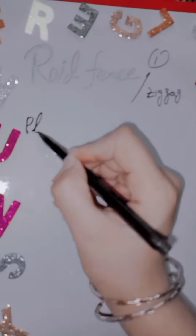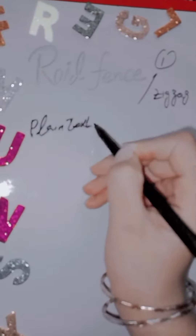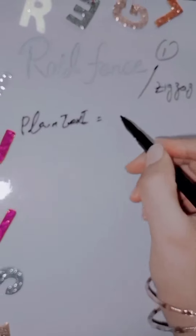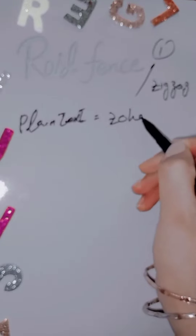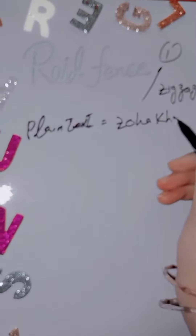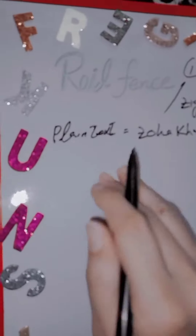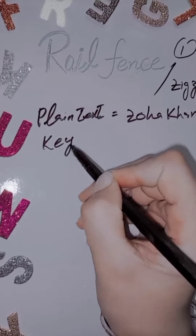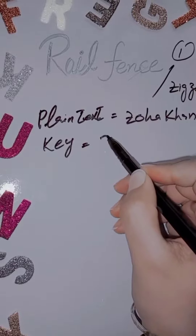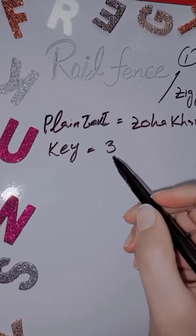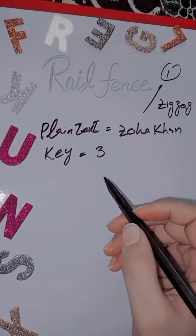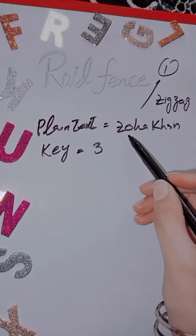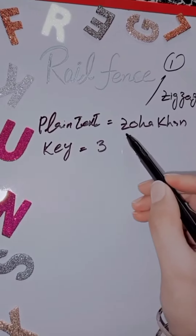We have the first plain text, which is the name Zohar Khan. We have the key given, and we have the length of our plain text.